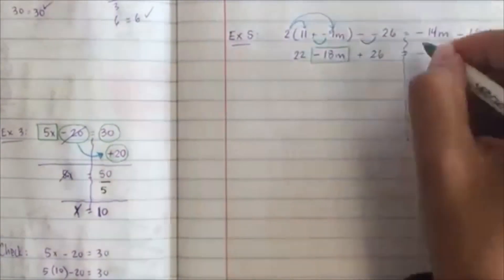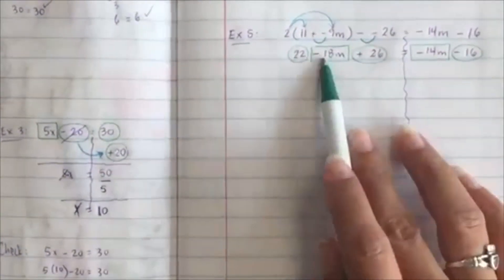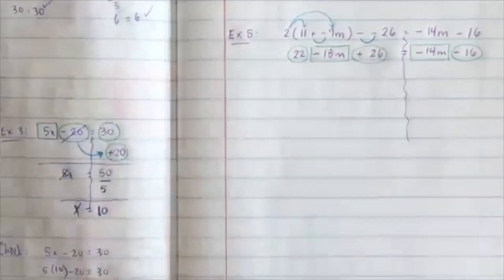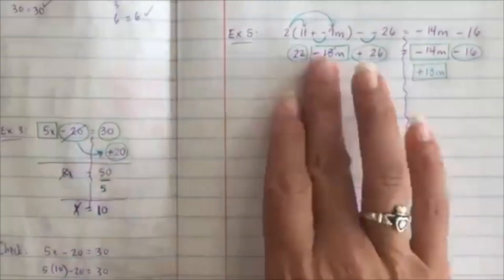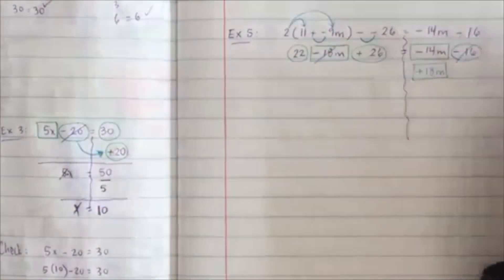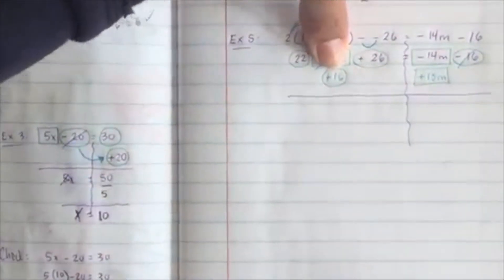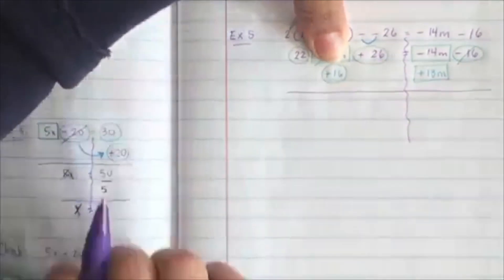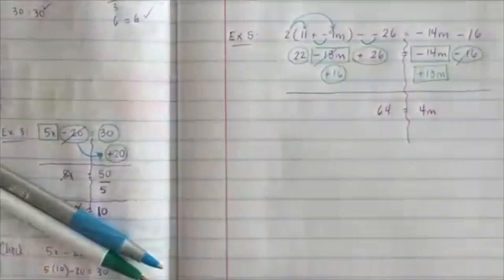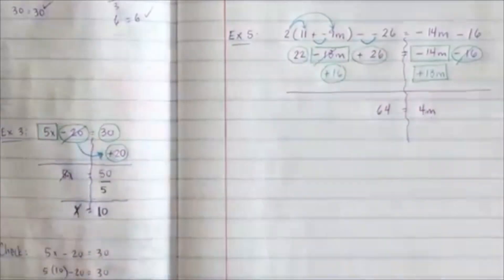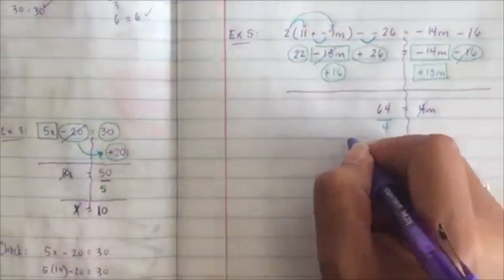Boxes and circles — do not forget the symbol. Whatever is easiest to move: let's move the circles to the left and the boxes to the right. So when you cross the river with negative 18, it's going to become positive 18. When you cross the river with negative 16, it's going to become positive 16. Combine like terms: you're going to have 64 on that side and 4m on the other side. What's the operation? Multiplication — when you go to the other side, it becomes division. So you're going to get m is equal to 16.